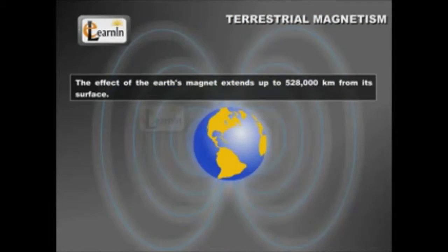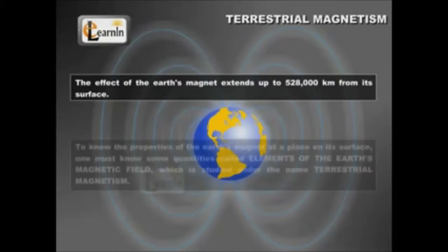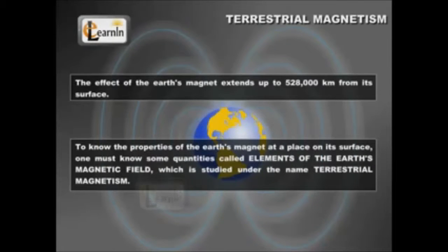The effect of the earth's magnet extends up to 528,000 kilometers from its surface. To know the properties of the earth's magnet, one must know some quantities which are called elements of the earth's magnetic field, which is studied under the name terrestrial magnetism.